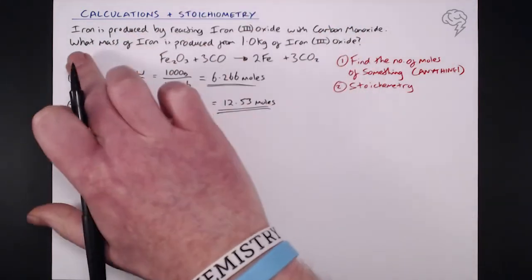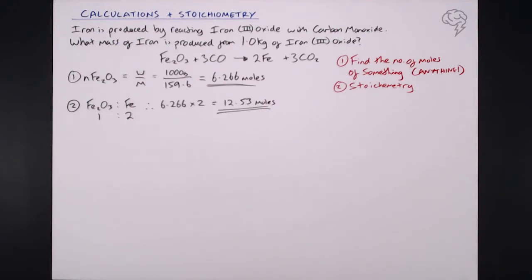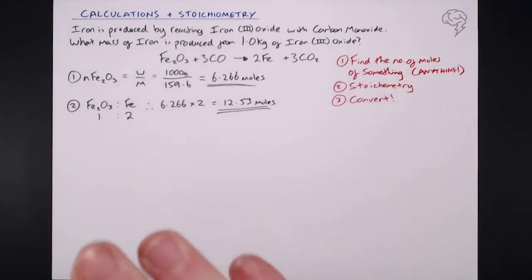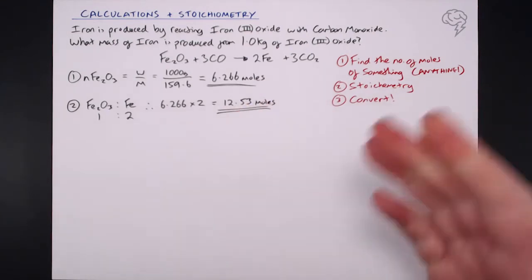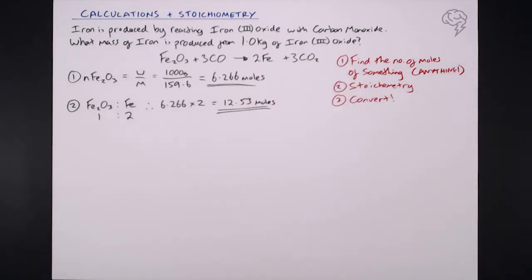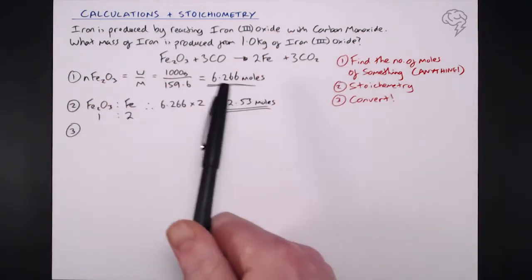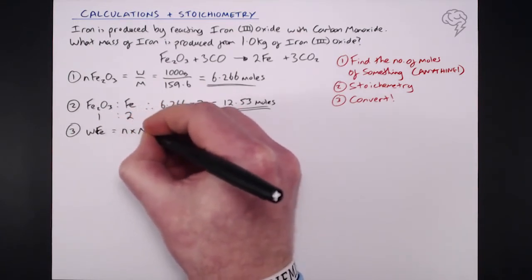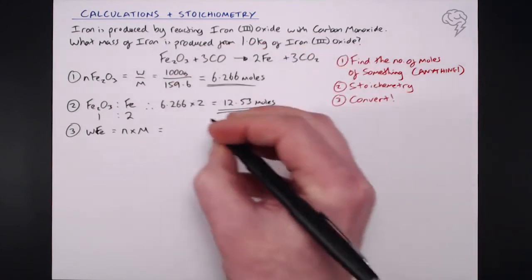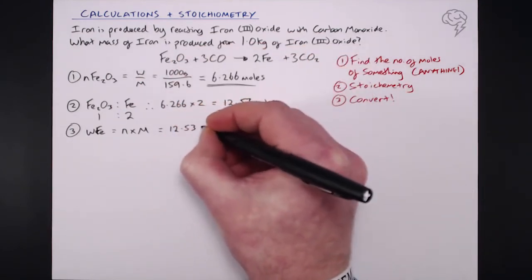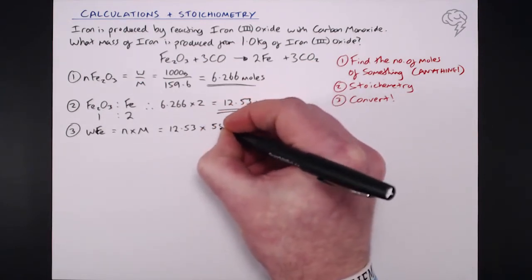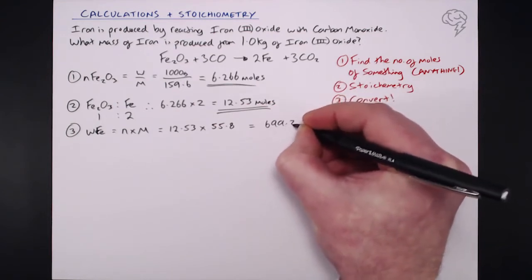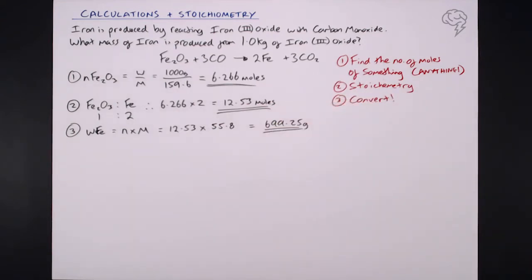We are now just one step away from finding the mass of iron produced. The final step is to convert: since the question asks for a mass, we use mass = number of moles × molar mass. The number of moles is 12.53, and the molar mass of iron from the periodic table is 55.8 g/mol. That gives us 12.53 × 55.8 = 699.25 grams. That is our final answer.